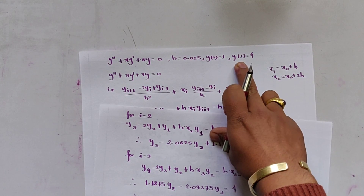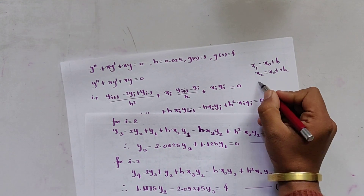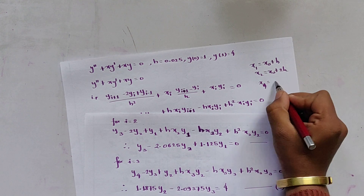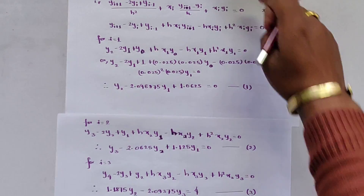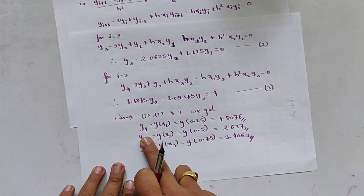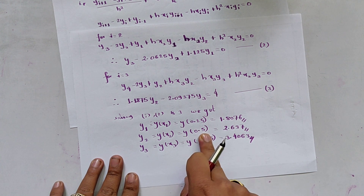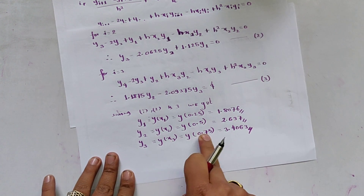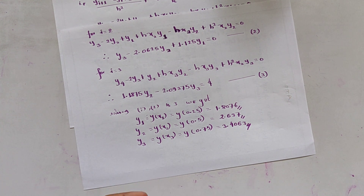Since y(1) = 4, we have y_4 = 4. Solving equations 1, 2, and 3 together, we get: y_1 = y(0.25) = 1.8076, y_2 = y(0.5) = 2.637, y_3 = y(0.75) = 3.4063. In this way we have solved the differential equation using the finite difference method. In the next video we will discuss linear programming problems. Thank you and bye bye.